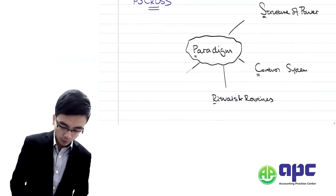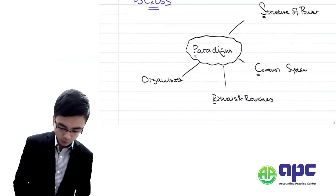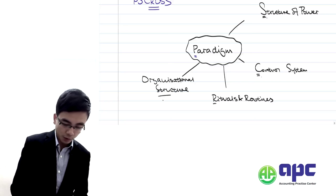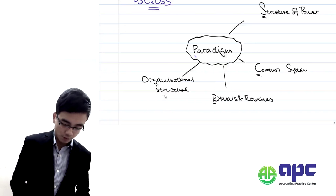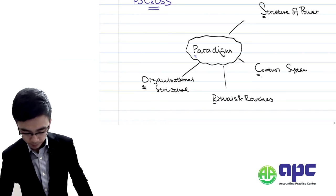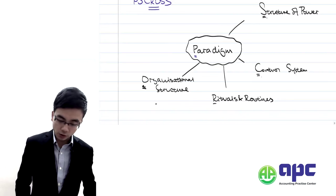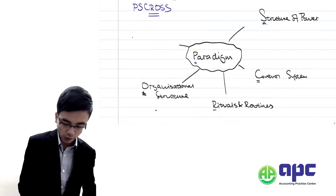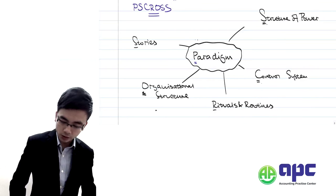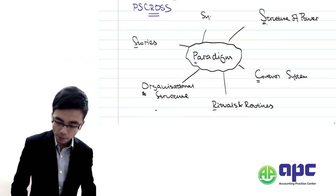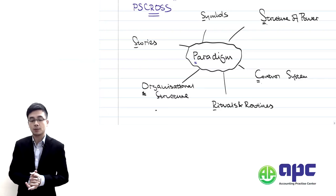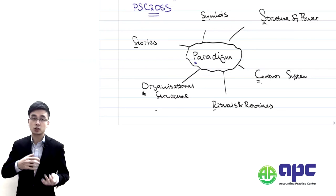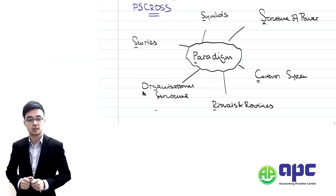O stands for organisational structure, which determines your power structure. For example, if the organisation is centralised, it is up to one CEO to make decisions. The remaining two S's are stories — what we tell employees — and symbols, such as a nice office given to employees who work hard. All you need to do in the exam is slot the information from the scenario into this PS CROSS model.